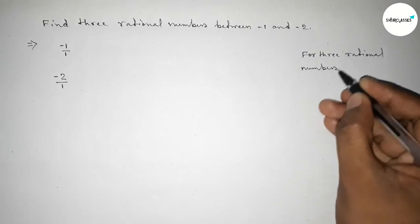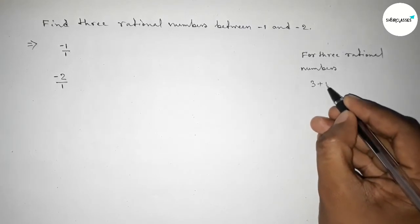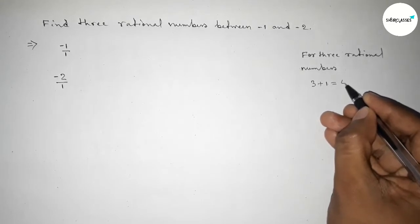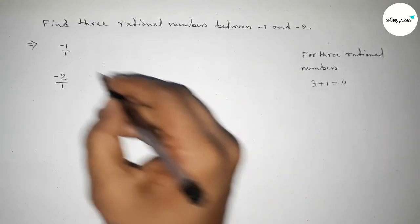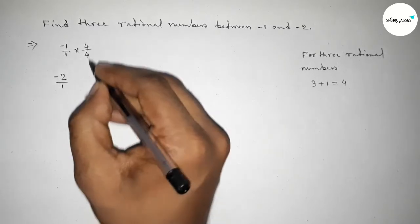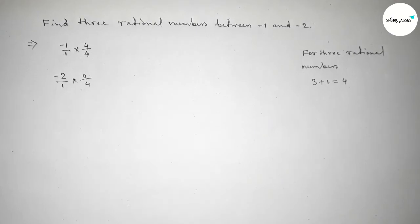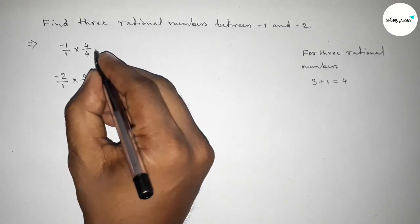We should multiply both numbers by 3 plus 1 equal to 4. So we should multiply both the numerator and denominator by 4. By this way, 4 over 4.